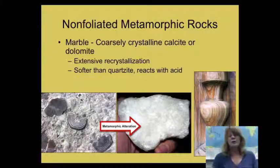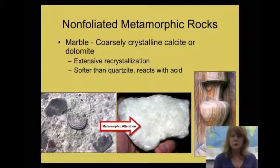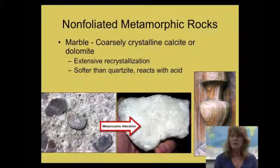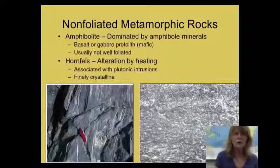Since both quartzite and marble can appear white or similar colors, how do you tell them apart? Quartzite is made of quartz, which is hard and non-reactive — it does not react to acid and can scratch glass. Marble is made of calcite, which is relatively soft and cannot scratch glass. If the rock is made of a mineral reactive to acid, the marble itself will react to acid. So there are a couple of easy ways to differentiate non-foliated quartzite from non-foliated marble.